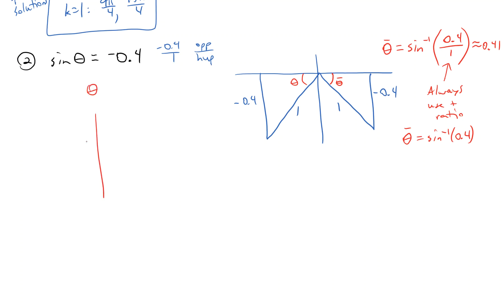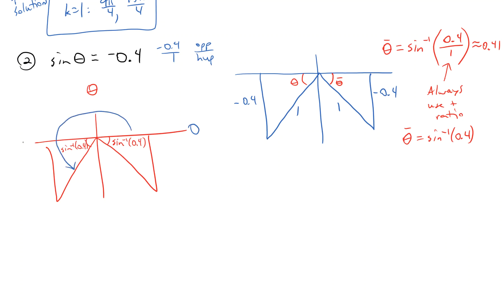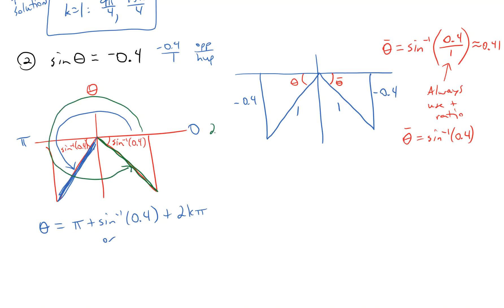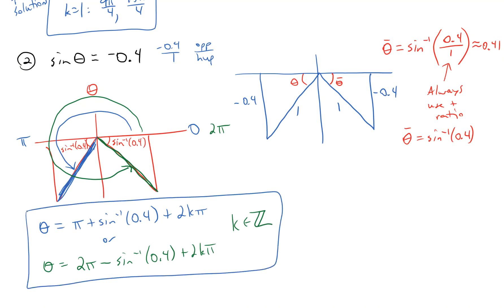Focusing on those reference angles, both are sine inverse of 0.4. The first theta value is just past pi, so theta equals pi plus sine inverse of 0.4, plus 2k pi. The second is just shy of 2pi, so theta equals 2pi minus sine inverse of 0.4, plus 2k pi. In both expressions, k is an integer — those are all the solutions.